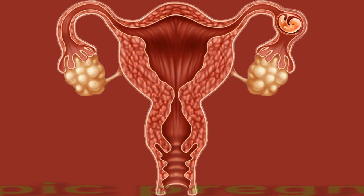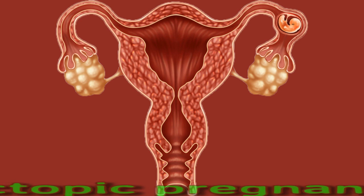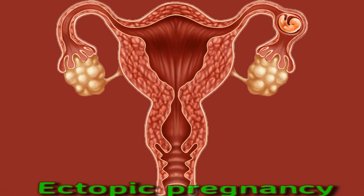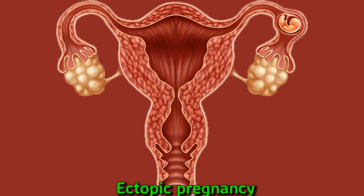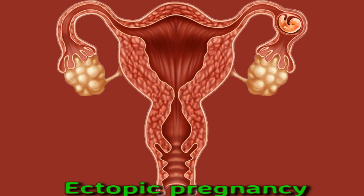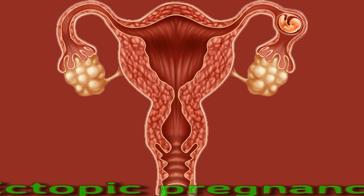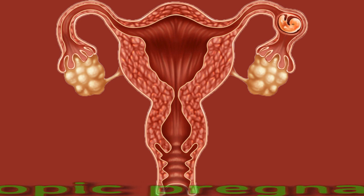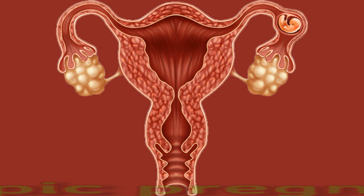An ectopic pregnancy can occur if a fertilized egg grows outside the uterus, usually in a fallopian tube. As the pregnancy progresses, this can cause the fallopian tube to burst, which can be life-threatening. Symptoms include mild pain or cramping in the abdomen or pelvis, lower back pain, and irregular vaginal bleeding. These symptoms can develop into severe abdominal or pelvic pain, shoulder pain, and dizziness. Ectopic pregnancy is an emergency, and people will require immediate medical attention.